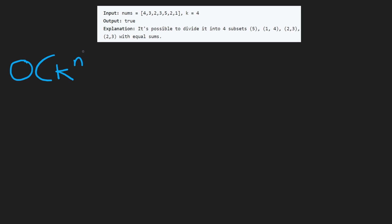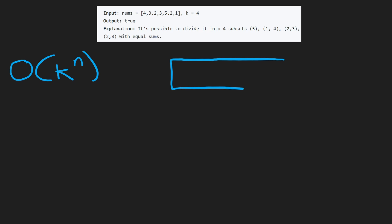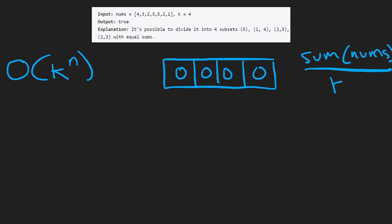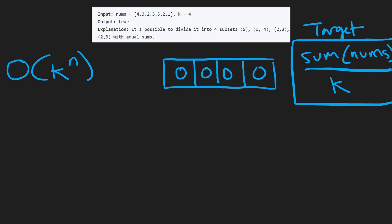So one way to think about this: we want k equal-size groups, like k buckets. If k is 4, we have four buckets, each initially zero. We want to fill each bucket with the sum of nums divided by k — that's our target. The idea is we iterate through the list of nums and each time we get to one of these integers, we have a decision: we can put this value in the first bucket, second bucket, third bucket, or fourth bucket.